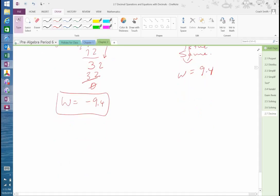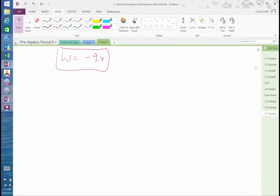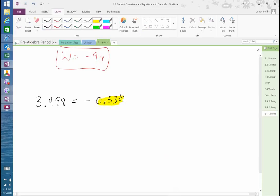Okay? Now, so let's look at one that has negatives and a decimal in your divisor. So, we have this one here, 3.498 is equal to negative 0.53k. So, we're multiplying. This is where we have our multiplication going. So, we've got to take and divide both sides by negative 0.53. Divide this side by negative 0.53.